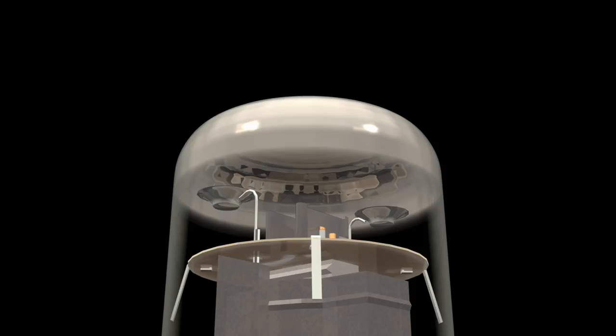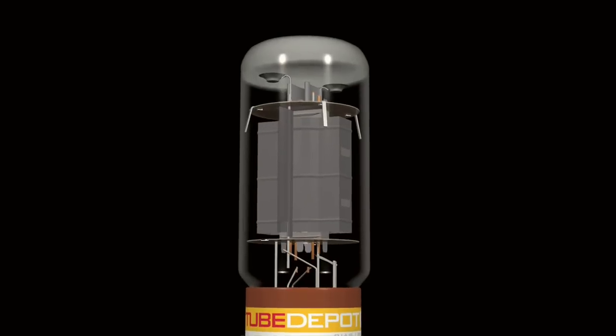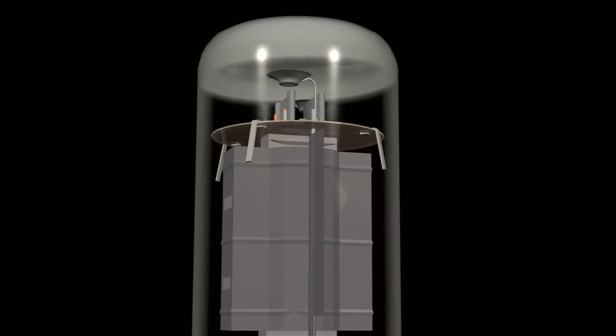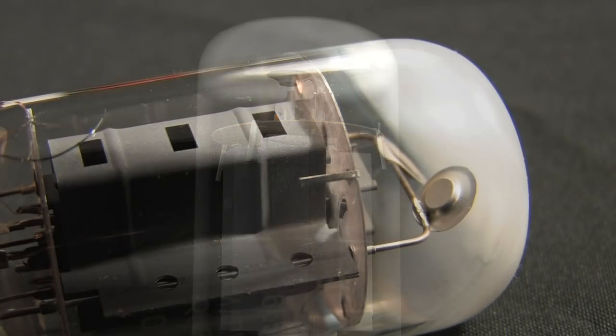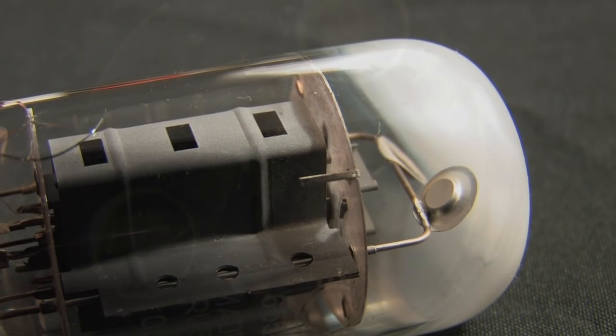Although the flash only happens once, that mirrored finish will remove any oxygen that's inside the tube for the life of that tube. If the tube develops a break and air gets into the tube, the getter flash will turn chalky white, which is a visual indication that the tube is bad and must be replaced.